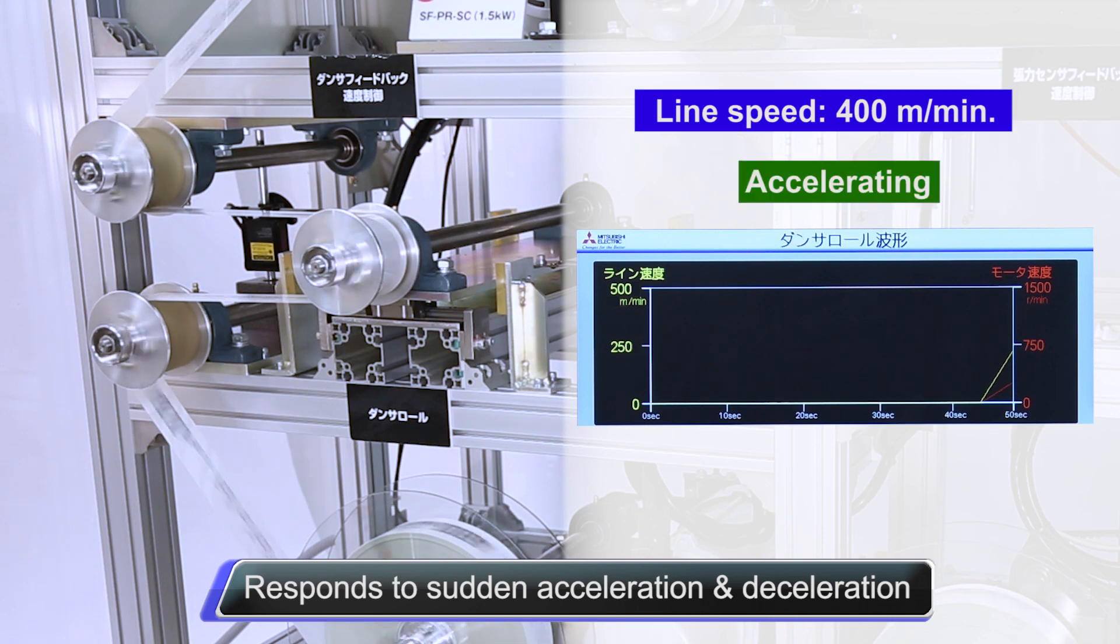The dancer roll operates stably even if it is repeatedly decelerated, stopped, and or accelerated.